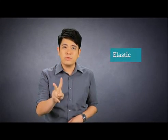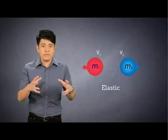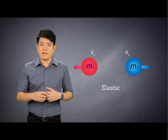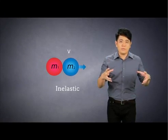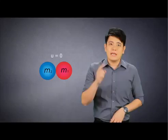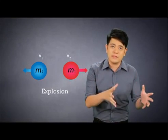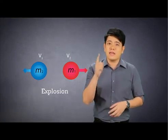There are three types of collisions. Number one: elastic. Number two: inelastic. And number three: explosion. In an elastic collision, both bodies will separate after collision. In an inelastic collision, both bodies will move together after collision. In an explosion, the total momentum before and after collision is zero.